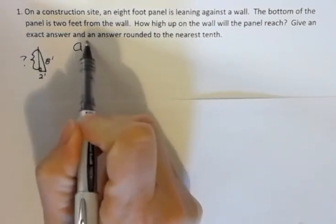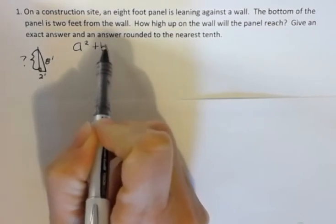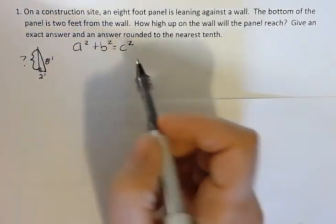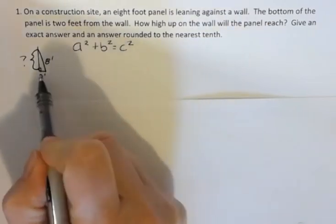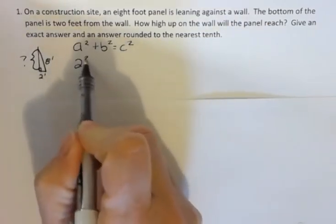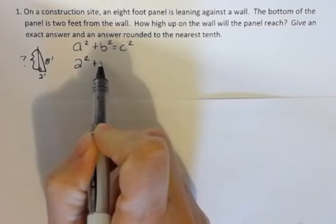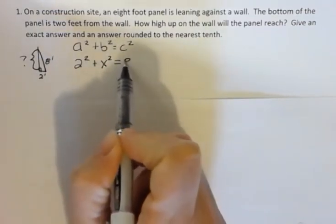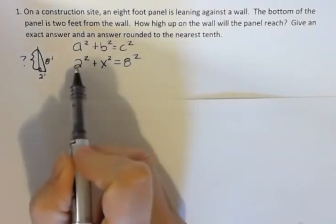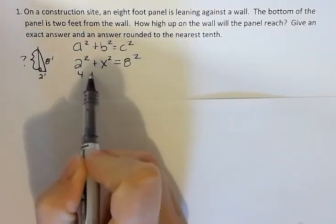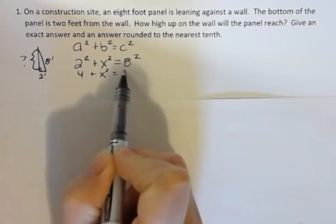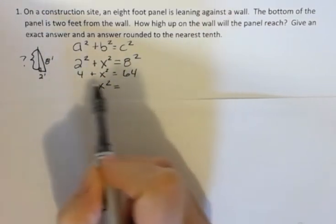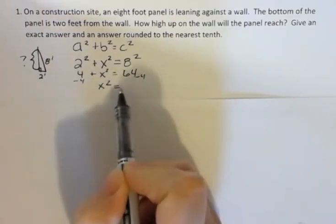So we're going to use the Pythagorean theorem a squared plus b squared equals c squared. We don't know one of those sides so let's say this is a, so I say 2 squared plus let's call it x squared equals 8 squared and this is going to be 4 and this is going to be 64. So x squared equals 60 if I subtract 4 from both sides.